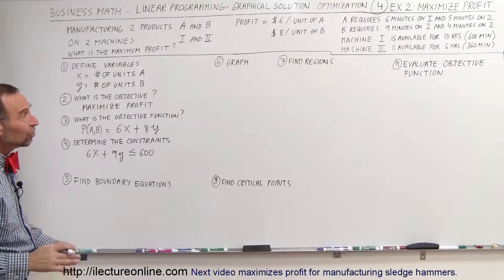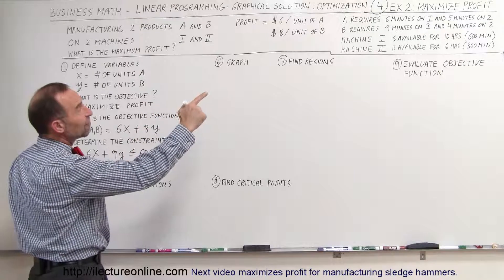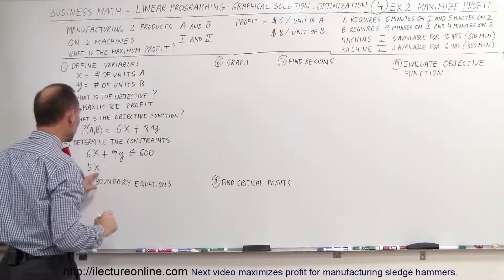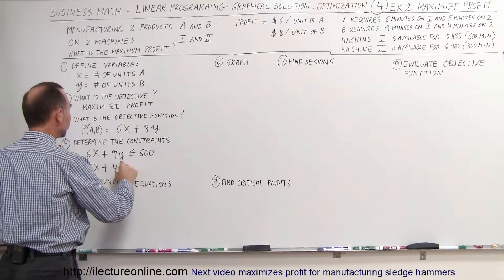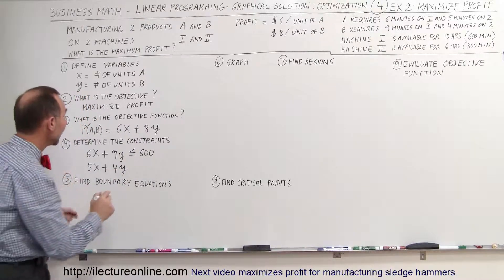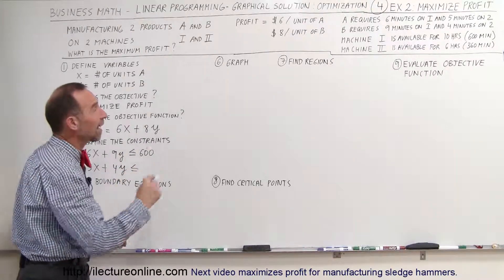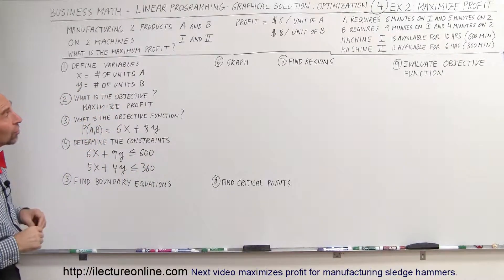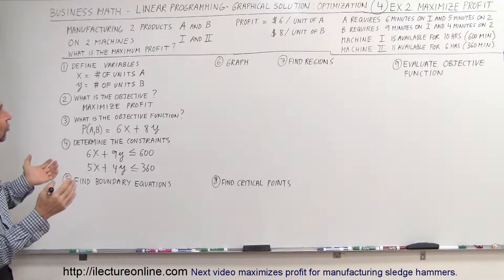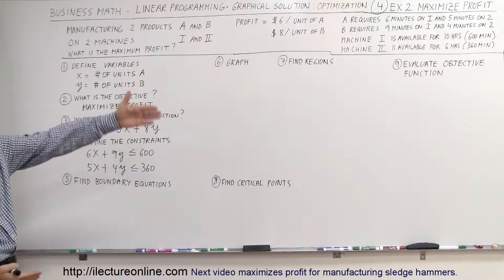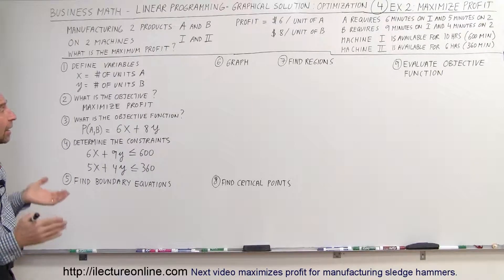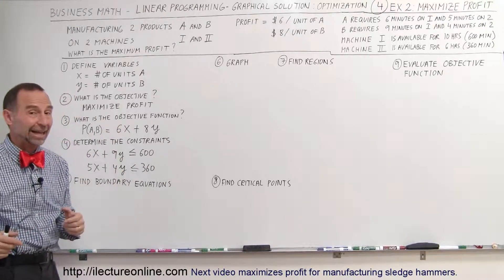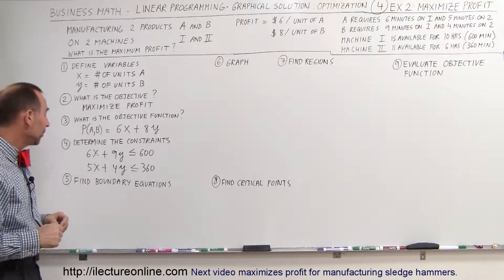The next constraint is machine number two. We need 5 minutes for A and 4 minutes for B. So 5X plus 4Y cannot exceed 360 minutes: 5X + 4Y ≤ 360. Those are the two main constraints. This constrains how many units we can make of each to achieve maximum profit — we just don't know how many of each to make yet.